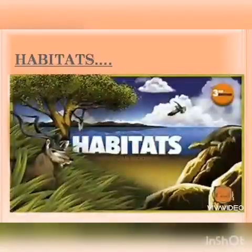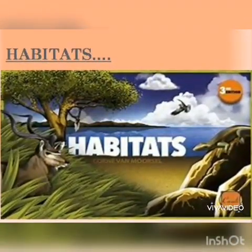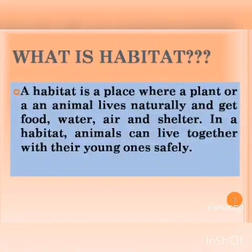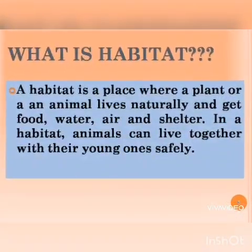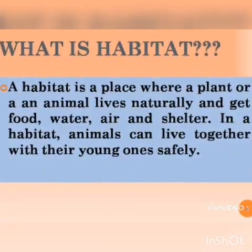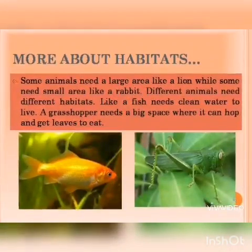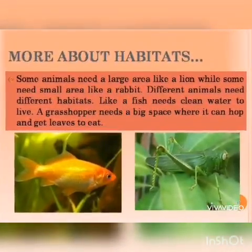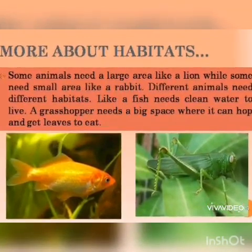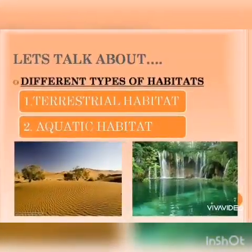This is Part 1 of this video. Before going further, we will first learn what is a habitat. A habitat is a place where a plant or an animal lives naturally and gets food, water, air and shelter. In a habitat, animals can live together with their young ones safe. Different animals need different habitats where they can live, like a fish needs clean water and a grasshopper needs a big space where it can hop and get food.